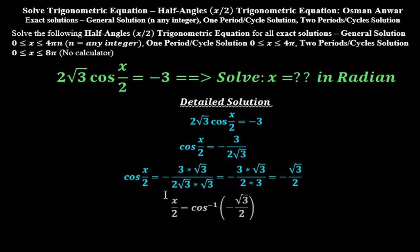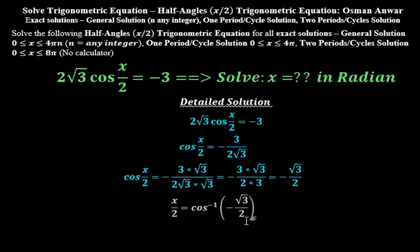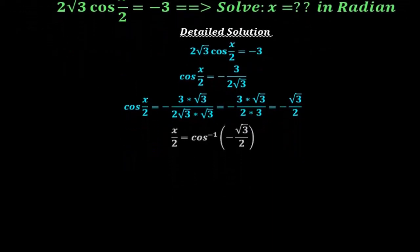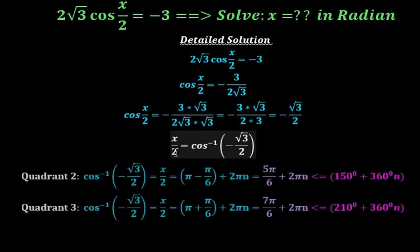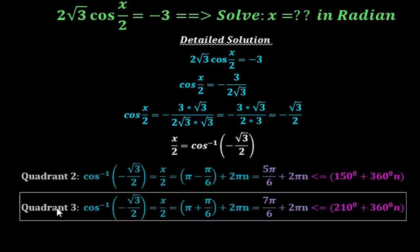That means x/2 = cos⁻¹(−√3/2). That is the solution for x/2, but we still need to look for x. So the solution is x, not x/2. x/2 = cos⁻¹(−√3/2) is in quadrant 2 and quadrant 3.